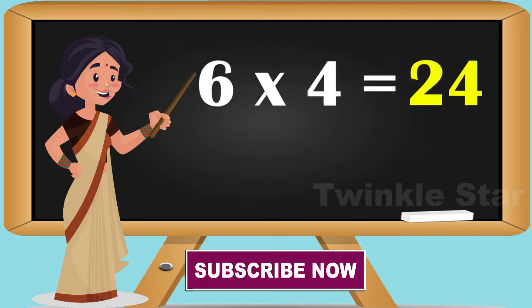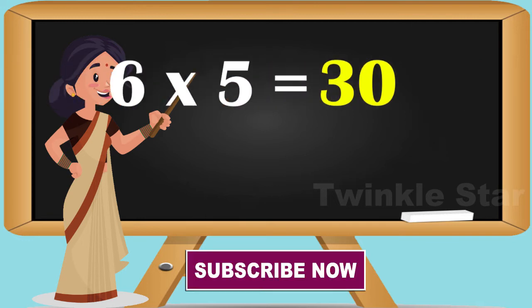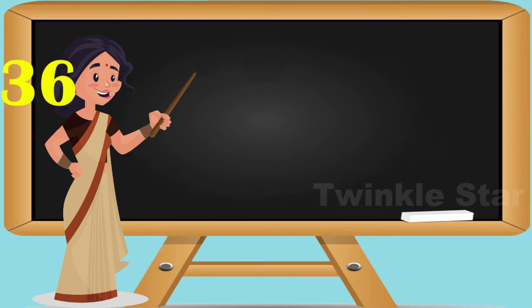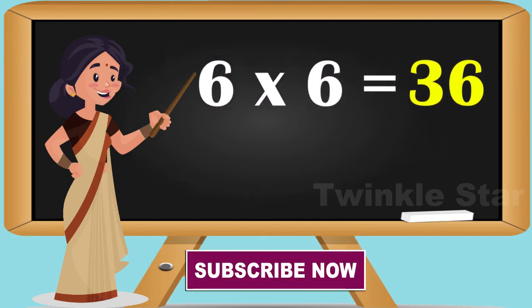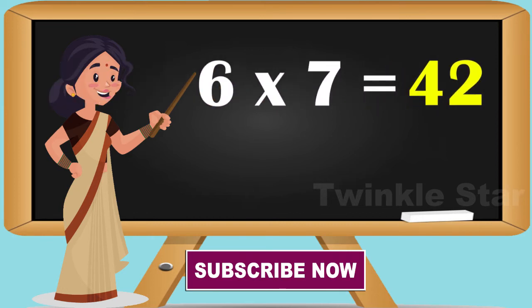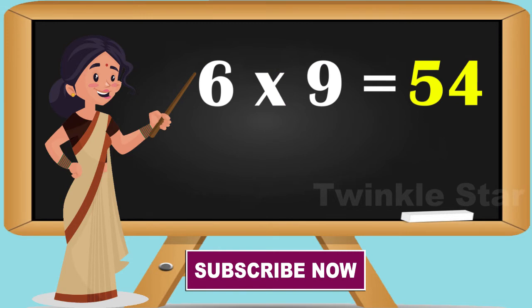Six fives are 30. Six sixes are 36. Six sevens are 42. Six eights are 48. Six nines are 54.